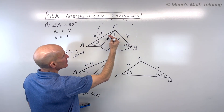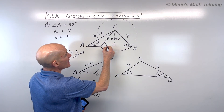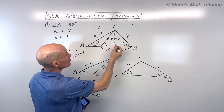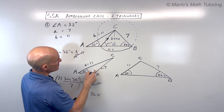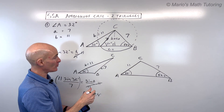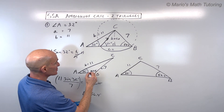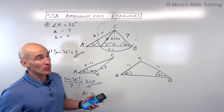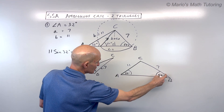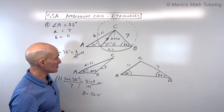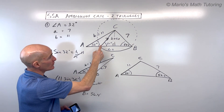Now, when we rotate side A, both copies are length 7, forming an isosceles triangle. The base angles of an isosceles triangle are congruent, so the supplementary angle B in the second triangle is 180 − 56.4 = 123.6 degrees. The acute case gives angle B = 56.4° and the obtuse case gives angle B = 123.6°.